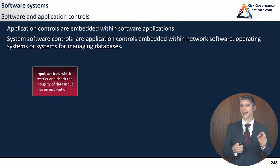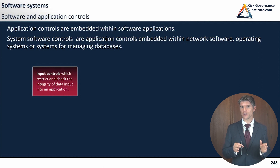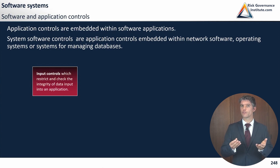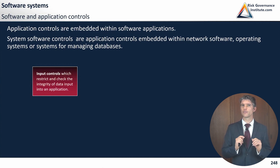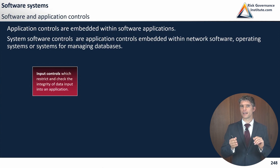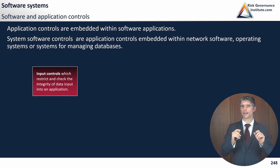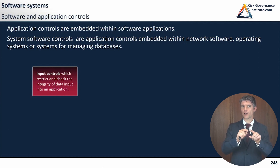We start with input controls. Input controls restrict and check the integrity of data input into an application. For instance, if you are creating a file on Excel to give to different users, you have something called data validation — you can find it under Data > Data Validation. It's a function where you can specify that a cell will only allow numbers.